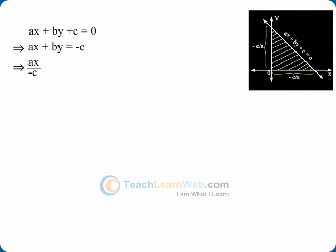ax divided by -c plus by divided by -c equals 1, which implies x divided by (-c/a) plus y divided by (-c/b) equals 1.